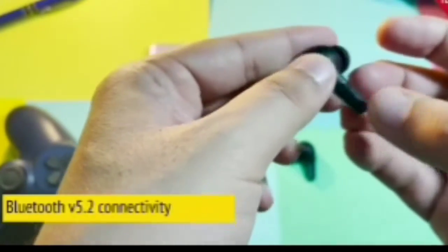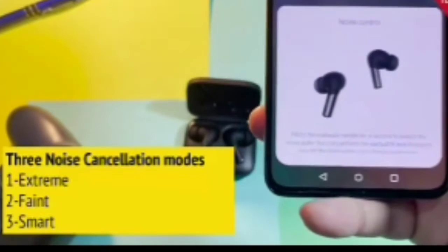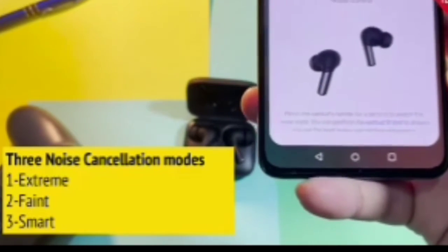The OnePlus Buds Pro have Bluetooth 5.2 for connectivity. OnePlus has also used an adaptive noise cancellation with three different modes: extremely faint and smart, so you can switch between the noise cancellation modes as well.